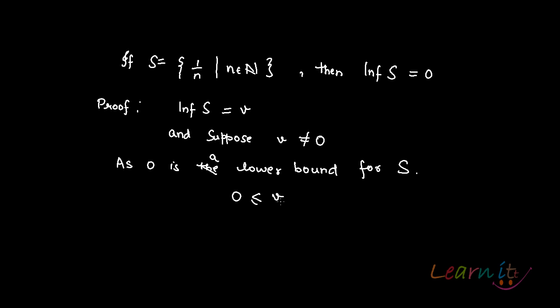Why? Because v is the infimum, so greatest lower bound. So any other lower bound should be lesser than v. So if v does not equal to 0 then that means v should be greater than 0.